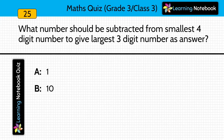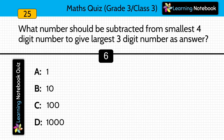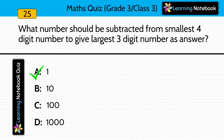Question twenty-four/twenty-five: what number should be subtracted from the smallest 4-digit number to give the largest 3-digit number? Answer is 1. The smallest 4-digit number is 1,000 and the largest 3-digit number is 999. So we just subtract 1 from 1,000 to get 999.